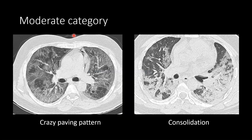These are images of 2 different cases in the moderate category. The first shows a classical crazy paving pattern in bilateral lung fields on HRCT thorax in axial view. The second is an HRCT thorax of another patient showing predominantly consolidation in bilateral lung fields.